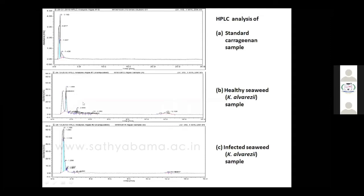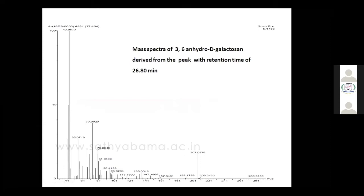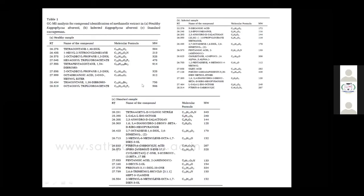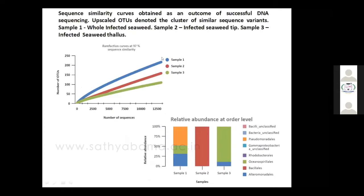In the GCMS analysis — especially for 3,6-anhydro-D-galactose, which is a major component of the carrageenan molecule — the peak shows a retention time of around 26 minutes. In the infected sample and standard samples, we have 2,3-anhydro-D-galactose and other galactose derivatives. In the standard and healthy samples, you can see the presence of these compounds. But in the infected sample, you can't see 2,3-anhydro-D-galactose, showing that carrageenan compounds have been substantially degraded.